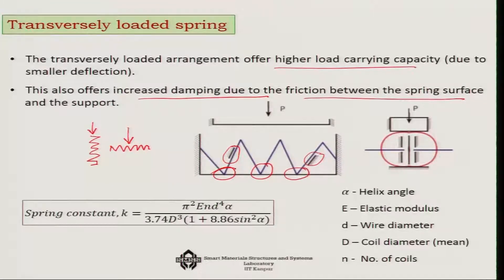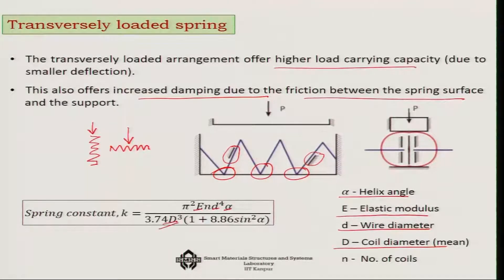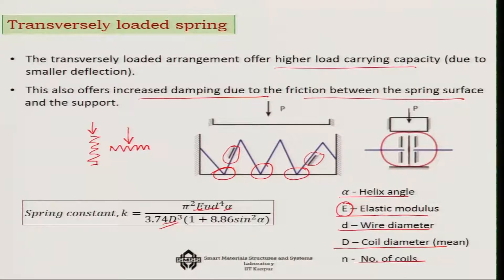In the transversely loaded spring, you also get increased damping because there will be friction between the spring surface and the support, which enhances the damping. The spring constant in this case depends on the helix angle, the elastic modulus E, the wire diameter, the coil diameter (inversely proportional), and the number of coils. Crucially, the spring stiffness depends on elastic modulus E rather than shear modulus G, and since E is much higher than G, you get larger bearing capacity and good damping.